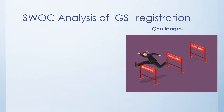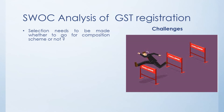Now let us see the challenges or disadvantages. The first challenge is that each small dealer will have to decide whether to go for a composition scheme or not. If your turnover is 10 lakhs, it is quite good; but if your turnover is 30 lakhs, you might find some restrictions because your expenses also will be more. So going for composition scheme may not make sense, and it is a challenge — each person will have to take professional help from a chartered accountant to find out whether the composition scheme is beneficial for them.